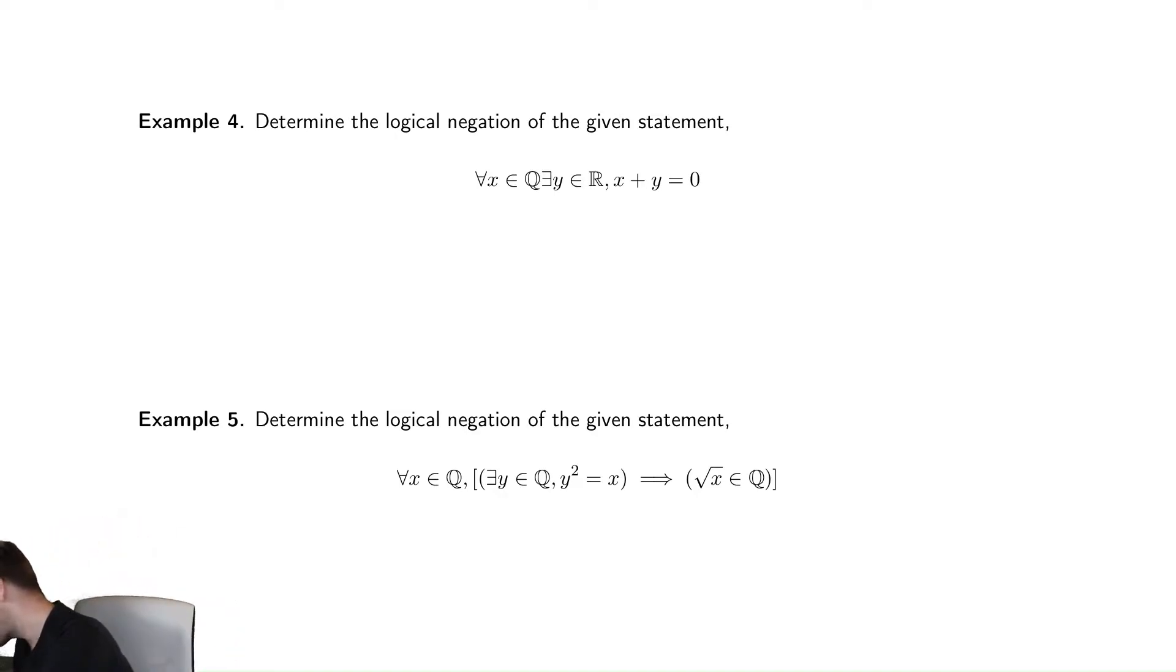This first one says that for every single rational number, there is a real number that when you add it to it, you get zero. This is true because there is an additive inverse. This exists in the rational numbers. I actually could have made this statement better by saying there exists a y in the rational numbers and it would still be true, but I said the real numbers and that makes it also true.